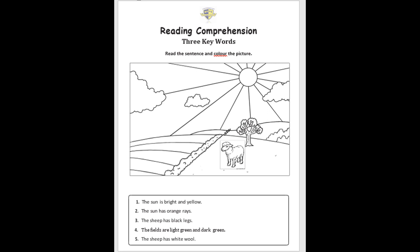Sentence number four: the fields are light green and dark green. KG2, do you know what the fields are? The fields are the green places you can see, like in the farm. So, in this picture, can you see the fields? Yes. Can you point to the fields? Very good. Now, you are going to take your light green and dark green and color them.